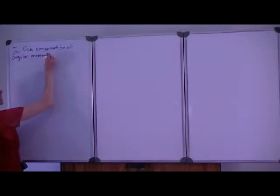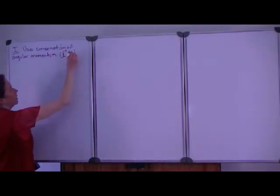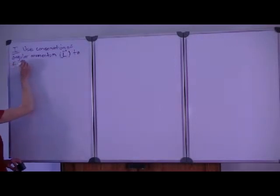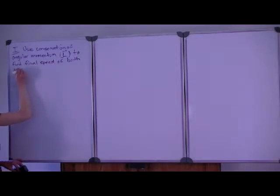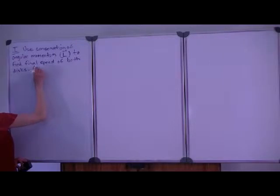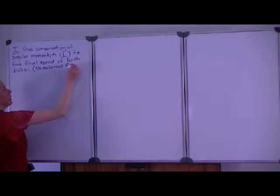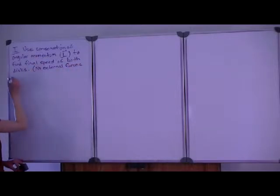We'll designate it by the capital letter L with a vector symbol over it because it's a vector quantity. We're going to use that to find the final speed of both disks, which act as a unit at the end. We're told that we can ignore the radius and that there's no friction on the shaft on which the disks are centered, and it's also important that no external forces are acting in the plane of rotation. That's how we can use the conservation of angular momentum.